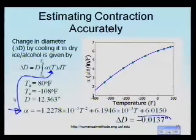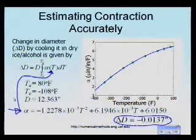That turns out to be minus 0.0137. So what we are finding out is that the amount of contraction in the diameter of the trunnion has been underestimated when we use the room temperature alpha, instead of understanding that alpha is changing as a function of temperature.